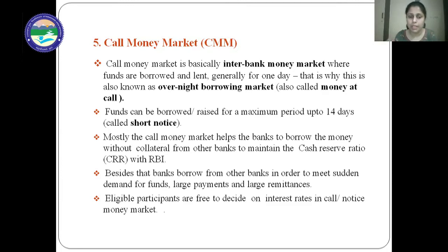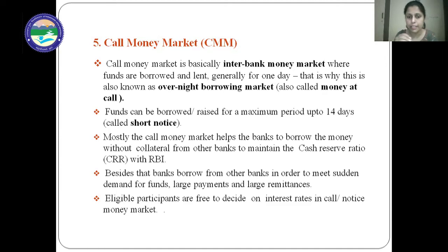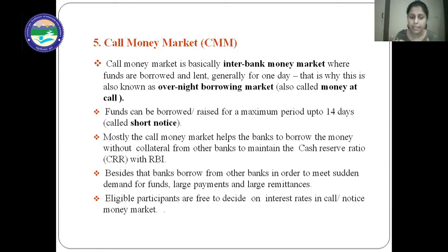Mostly the call money market has banks borrowing money without collateral from other banks to maintain the Cash Reserve Ratio with RBI. Sometimes it happens that banks are not able to fulfill their cash reserve requirement, so at that time they borrow funds and put them toward their Cash Reserve Ratio requirement. Besides that, banks borrow from other banks in order to meet sudden demand for funds, large payments, and large remittances.